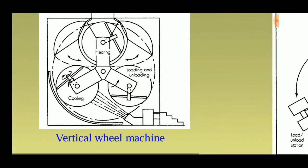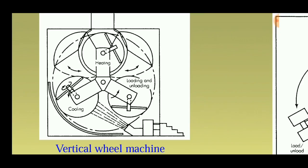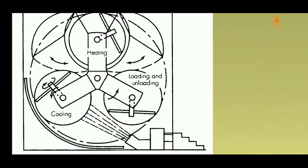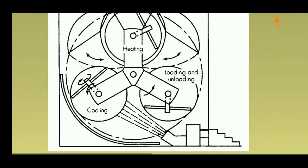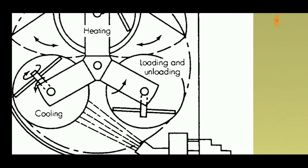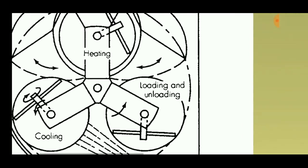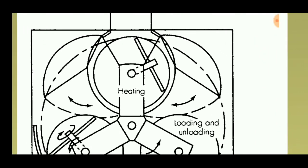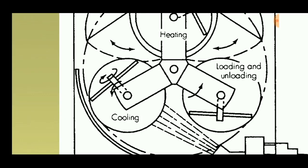There are four methods in rotational molding. The first is the vertical wheel machine. This machine contains three stations that are rotated along its own axis in the vertical direction: a loading and unloading station, a heating station, and a cooling station. These stations contain blades so that they can mix the molten plastic evenly. First, the plastic is placed in the wheel at the loading and unloading station, then the wheel goes to the heating station where the plastic melts and the blade causes the molten plastic to coat the inside surface.